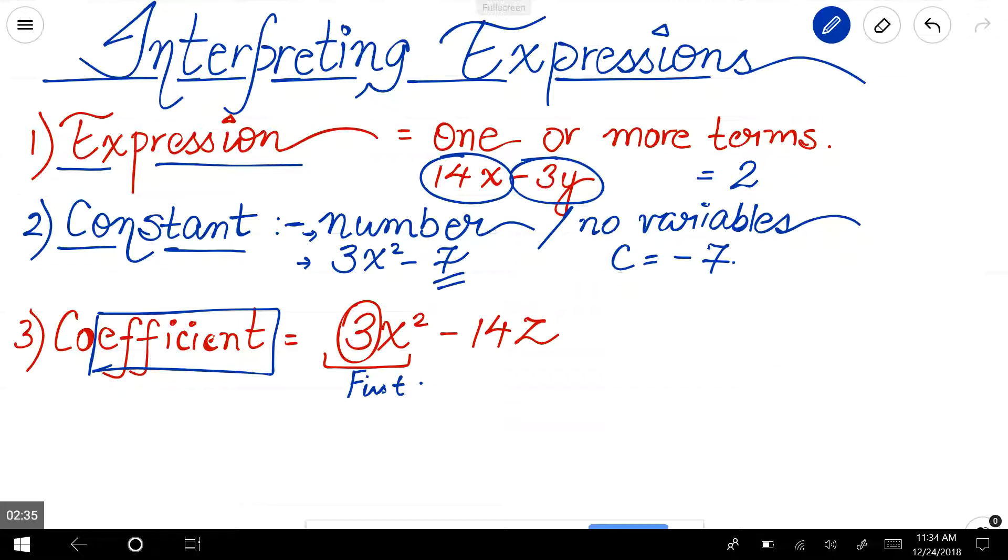One way to remember, just a funny way to remember. For this one, with the z, the coefficient is negative 14. So the coefficient is going to be 3. And another coefficient in this expression is negative 14.